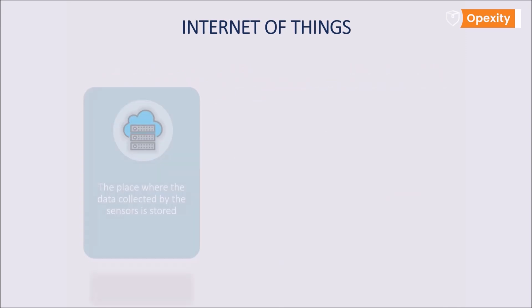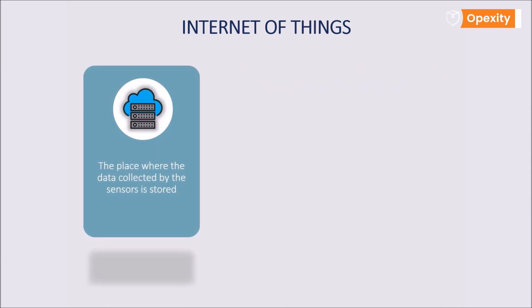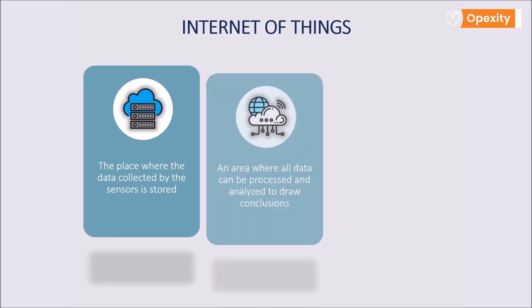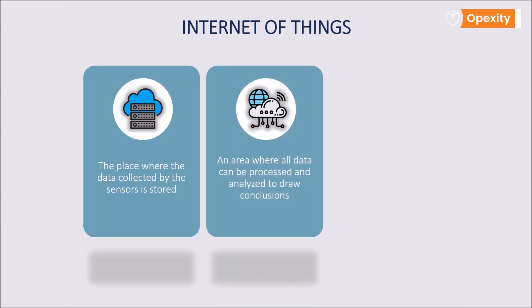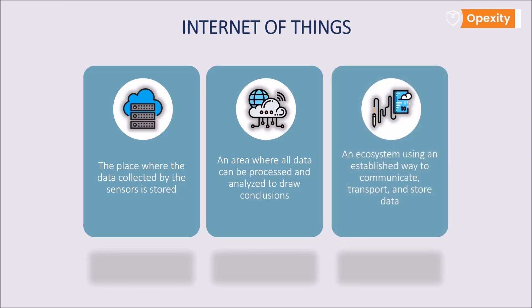The Internet of Things can also be thought of as a place where the data collected by sensors is transmitted and stored — an area where all data can be processed and analyzed to draw conclusions. Lastly, it can be an ecosystem that uses an established way of communicating, transporting, and storing data.